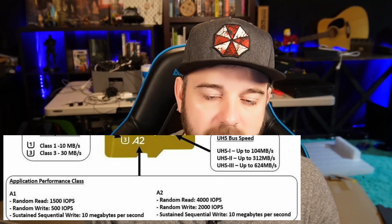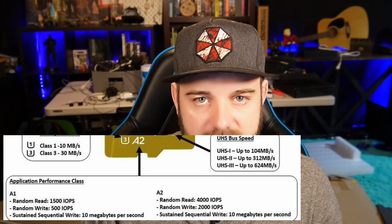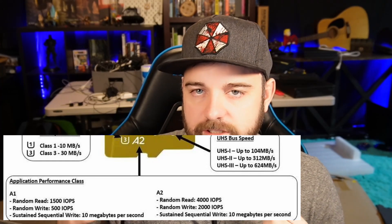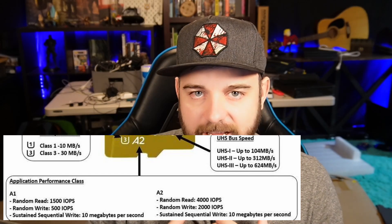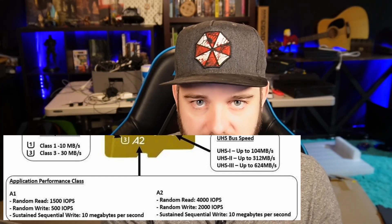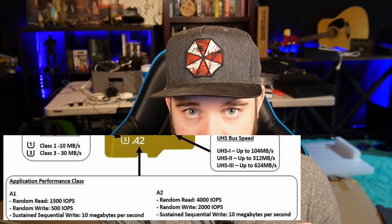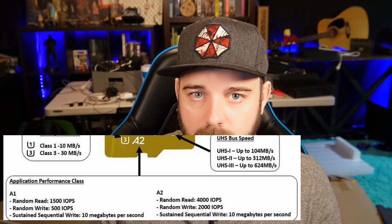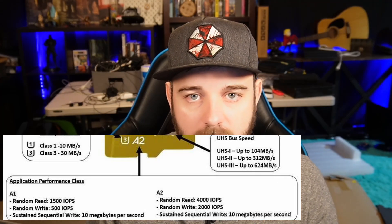Now let's get into the meat of this — the A1 and A2 standard, which is the application performance class. From my understanding, this was created for applications such as throwing a card into a mobile phone, being able to access video, maybe some files at the same time, downloading games and running applications from the SD card. These cards are approved to work really well with applications.